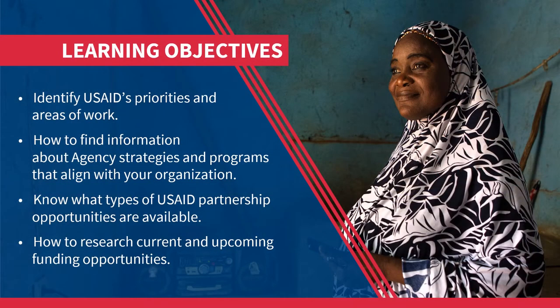In this module, you will learn how to identify USAID's priorities and areas of work, how to find information about agency strategies and programs that align with your organization, what types of USAID partnership opportunities are available, and how to research current and upcoming funding opportunities. We will mention a number of resources throughout this module and will provide website links at the end so you can continue exploring USAID funding opportunities.